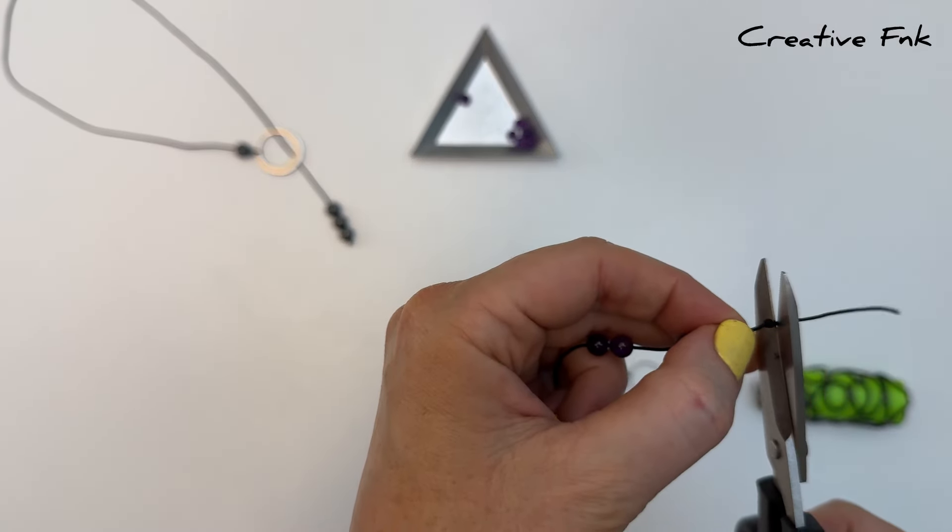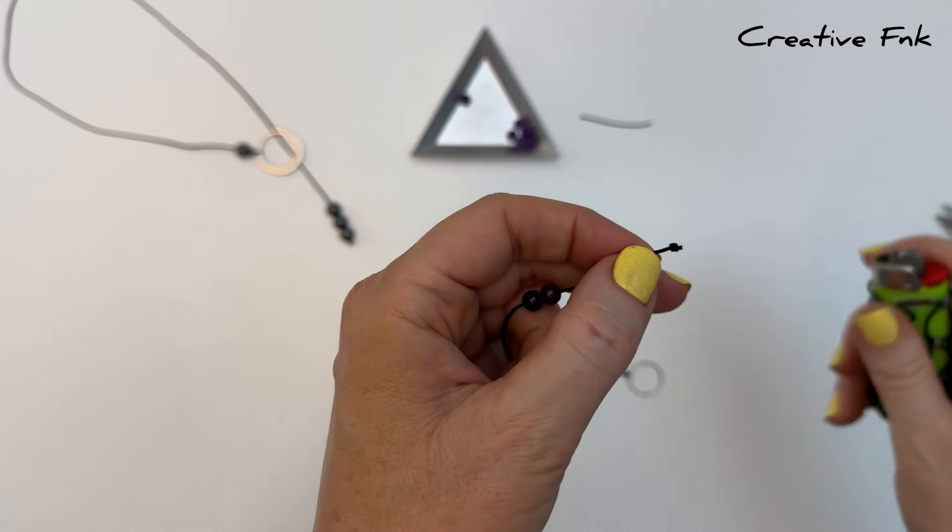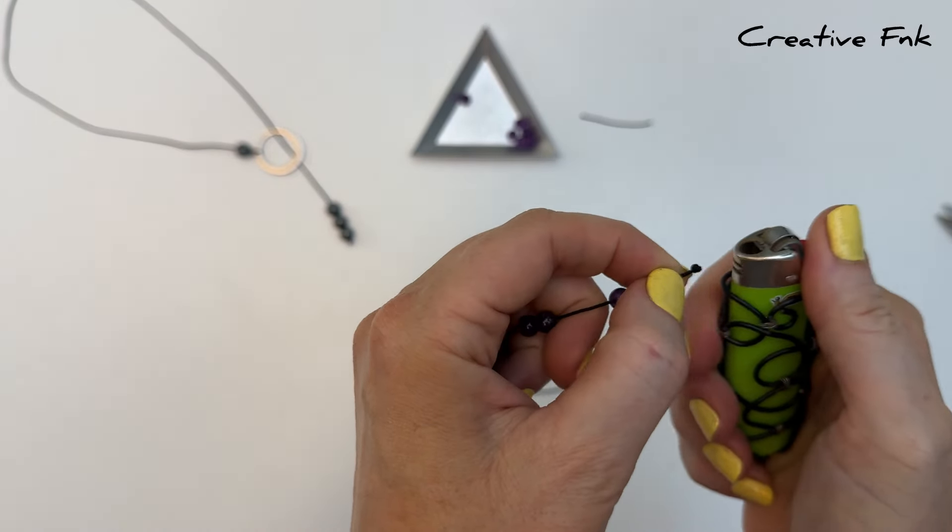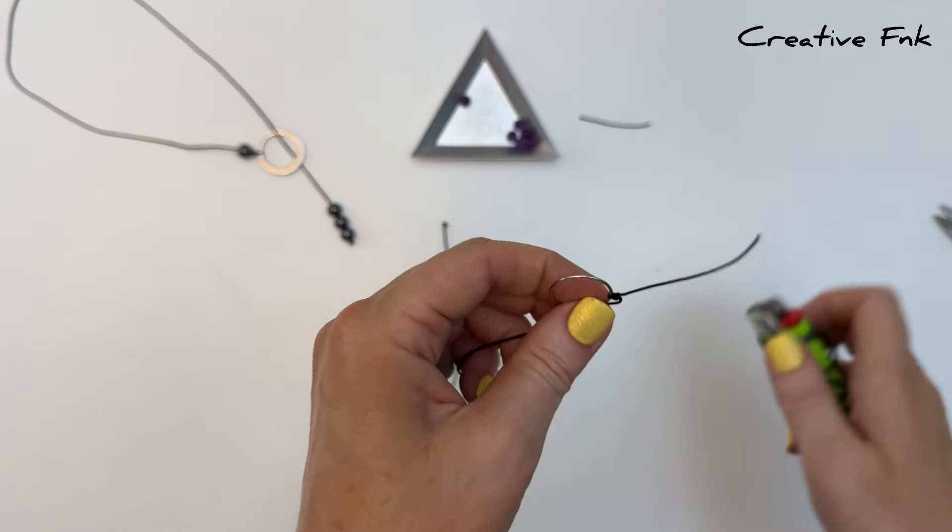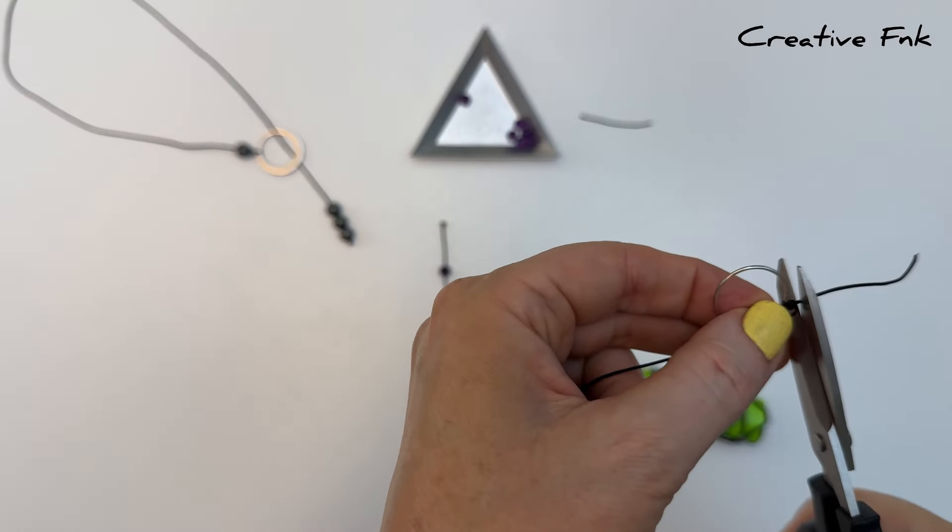And then we can cut both our tails off and singe with a lighter so they don't fray. So nice and close to those knots and then just melting the end and tapping it to fuse it onto the knot so it won't come undone.